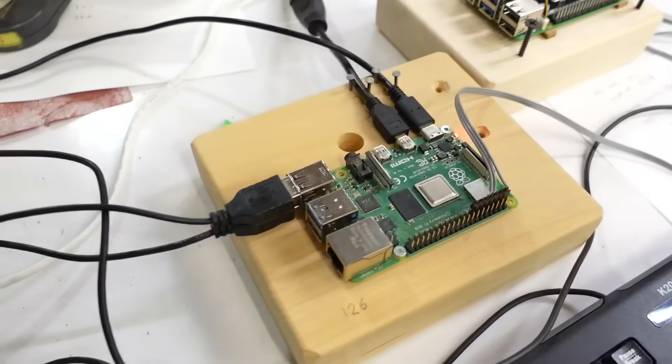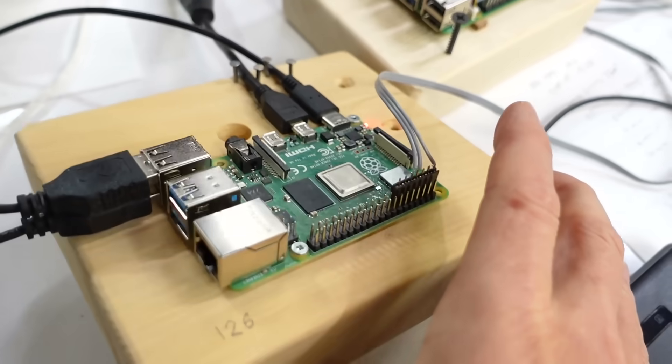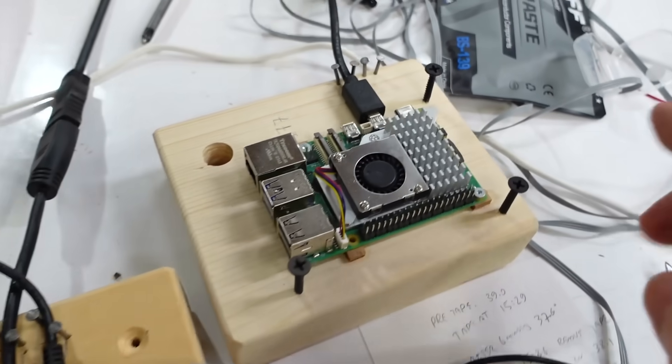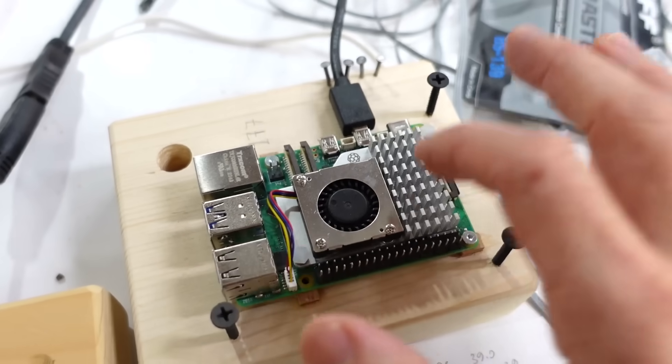And that's why for my Raspberry Pi computers rather than an enclosure I just mount them to a block of wood so they can radiate heat better. And if I'm worried about things falling on them I sometimes add some screws around it so if something hits them it hits those first before it hits the Pi.